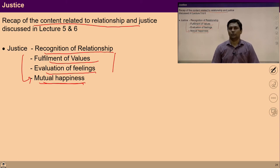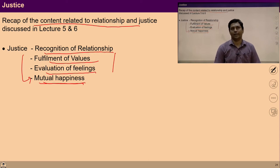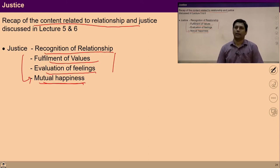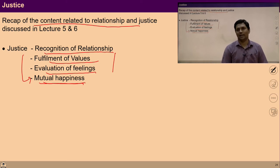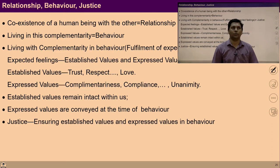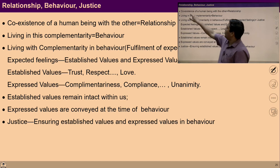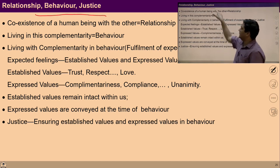In justice, four steps are involved: first, recognize the feeling of relationship with definiteness so justice can be ensured in continuity; second, fulfill all values required for a harmonious relationship; third, evaluate whether feelings are received by the others; and fourth, if they are received, the outcome is mutual happiness, meaning justice is ensured. Now we can talk about relationship, behaviour, and justice in more detail.